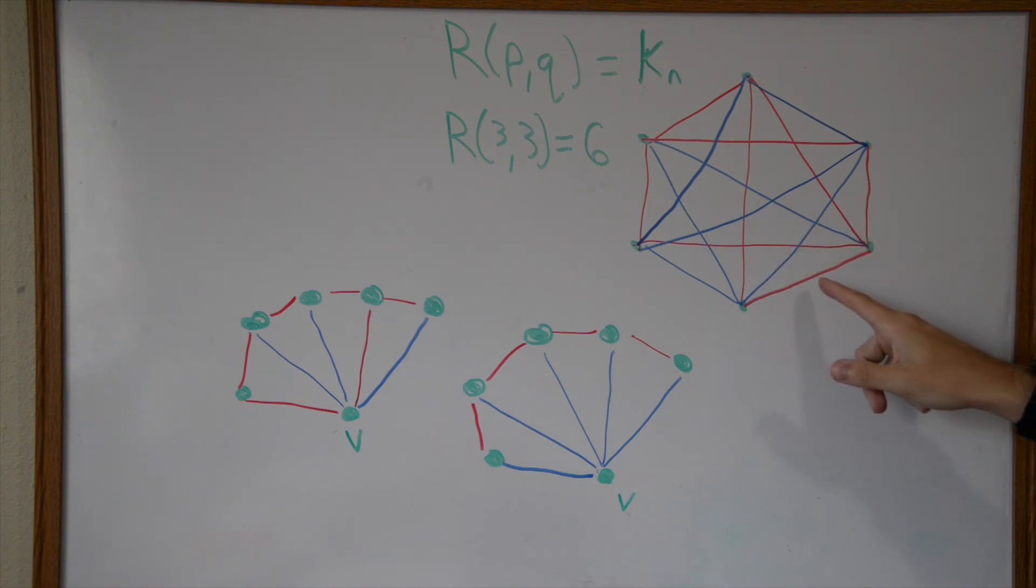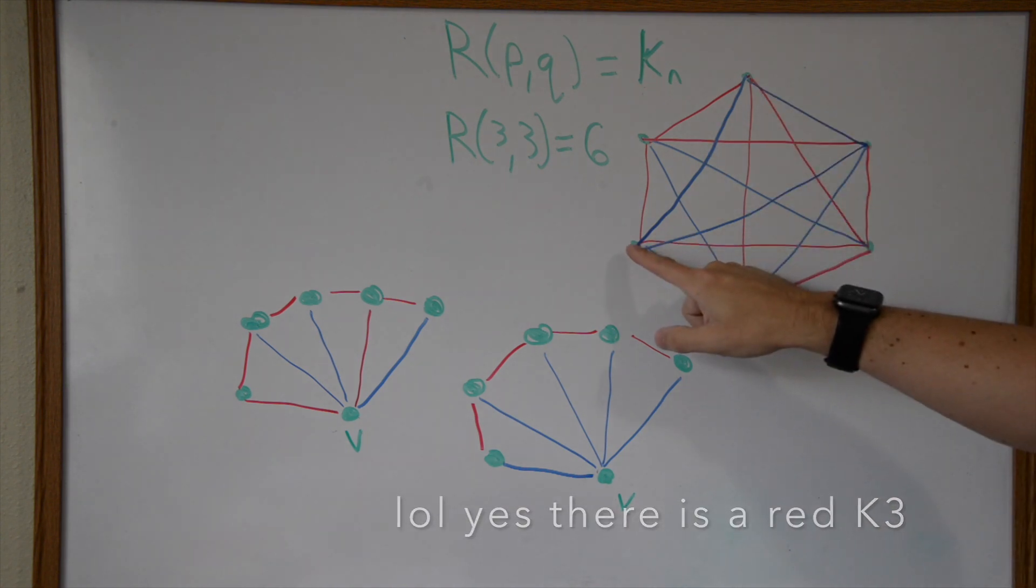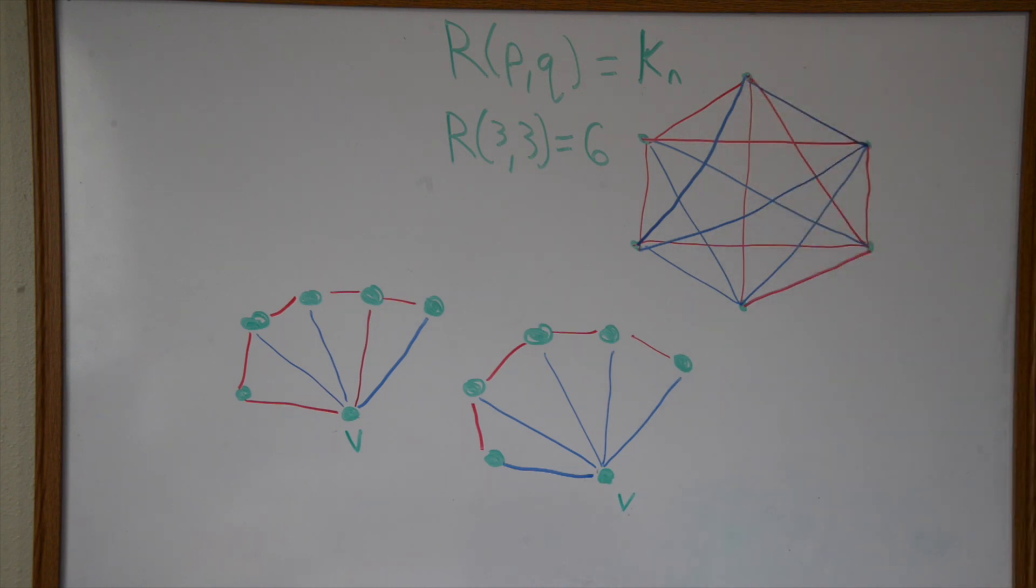If you were to look you would see that there's at least a blue triangle, a blue complete graph on three vertices. There may also be a red one, maybe not with the way I've drawn it, but there is a blue in here.